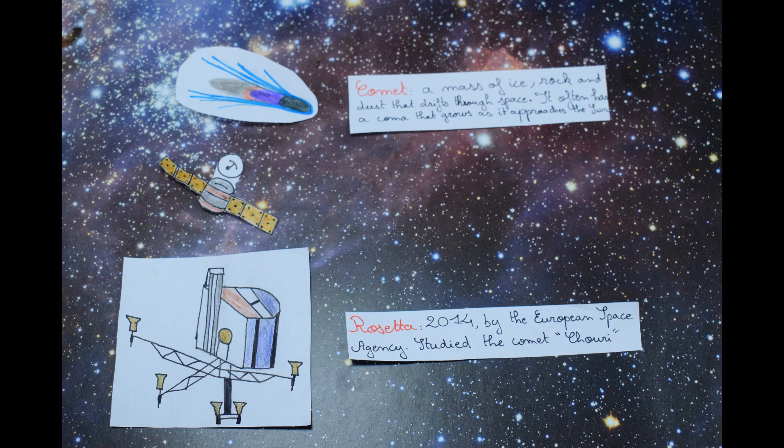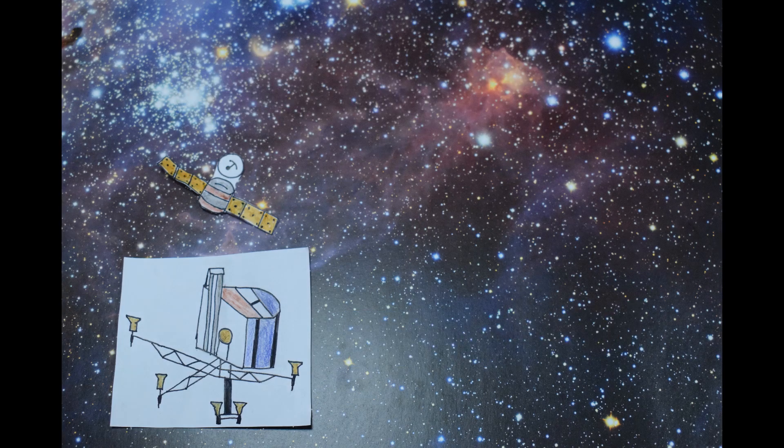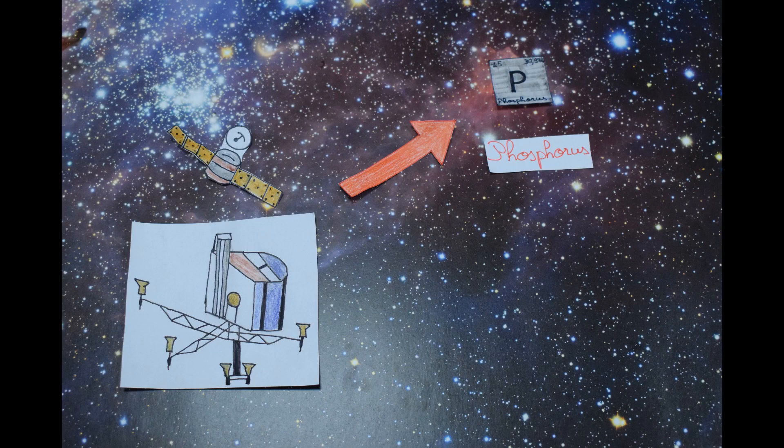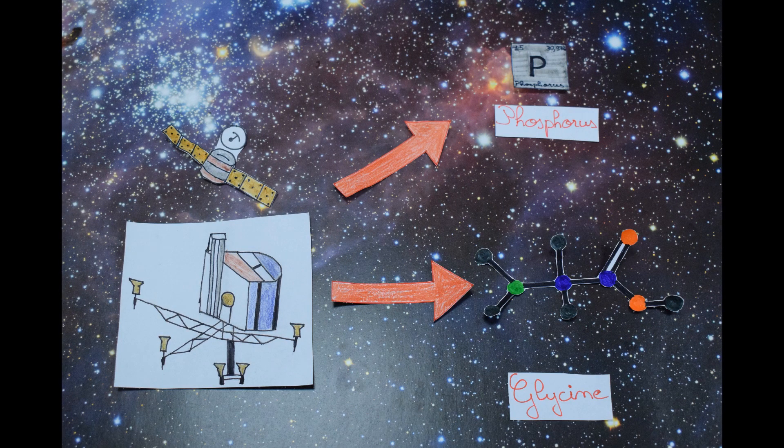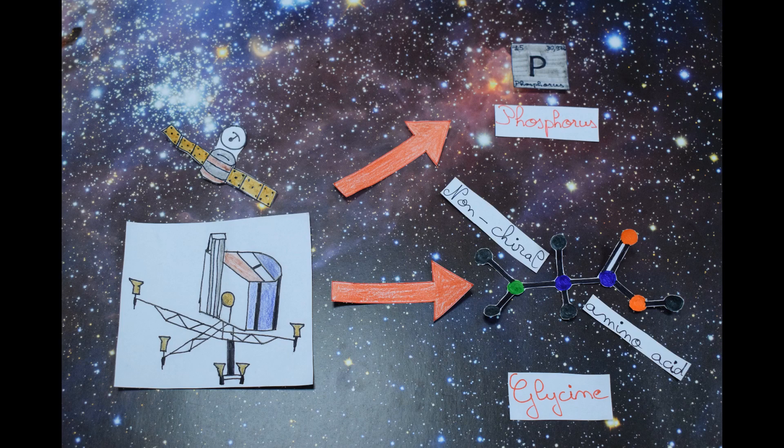In this mission they found, among other molecules, two major traces of life: phosphorus and the amino acid glycine. But unfortunately, glycine is the only non-chiral amino acid.